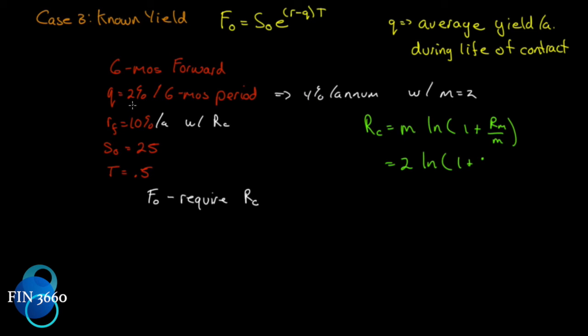Now all we have to do is substitute in. We know that m equals 2, so we will get 2 × ln(1 + Rm/m). What's our Rm? Rm is 0.04 - don't take the 0.02, remember everything must be expressed annually, average yield per annum. So it's 2 × ln(1.02). We will get 3.96%. So now we have our q expressed annually: 3.96% per annum with continuous compounding. F₀ requires continuous compounding, we're given r with continuous compounding, now we have q with continuous compounding.